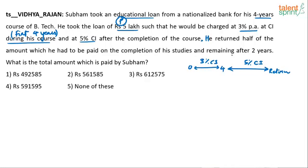Now what did he do? He returned half of the amount which he had to pay on the completion of his studies. So at the end of four years he had to pay some amount — he returned only half of it. Half was paid at that point, and the remaining was paid after two years.